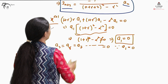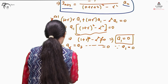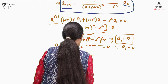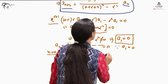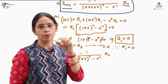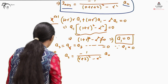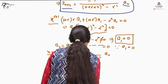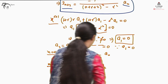Substituting n = 0 into the recurrence relation gives: a₂ = -1 / [(r+2)² - α²] · a₀. Substituting n = 2 gives: a₄ = -1 / [(r+4)² - α²] · a₂. Since a₂ is already written in terms of a₀, the expression for a₄ becomes: a₄ = 1 / {[(r+4)² - α²]·[(r+2)² - α²]} · a₀.